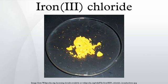Anhydrous iron chloride adopts the BiI3 structure, which features octahedral Fe(3+) centers interconnected by two-coordinate chloride ligands. Iron chloride hexahydrate consists of trans-[Fe(H2O)4Cl2]+ cationic complexes and chloride anions, with the remaining two H2O molecules embedded within the monoclinic crystal structure.